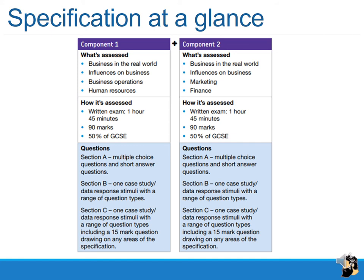It is 50% on each, written, one hour and 45 minutes, 90 marks. Each paper has Section A, B, and C. Section A is multiple choice — one correct answer from several options. Some find it easy, some find it hard, but it is the easiest part. Then there is a case study in Section B with data response stimuli and a range of questions. Section C is also a case study with data response stimuli and a range of question types, including a 15-mark question.